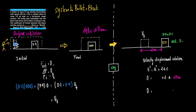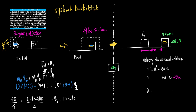We write: mass of bullet × velocity of bullet + mass of block × velocity of block = final momentum. The block is initially at rest so its velocity is zero. Mass of bullet is 0.1 kg, velocity is 400 m/s. So final velocity = (0.1 × 400) / (3.9 + 0.1) = 40 / 4 = 10 m/s.